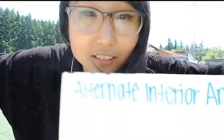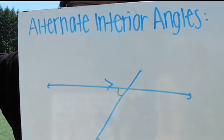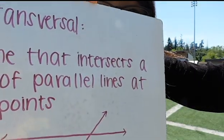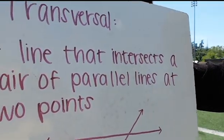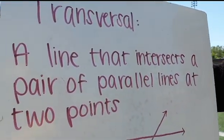Let's be alternate interior angles. Alternate interior angles are congruent and be on opposite sides of the transversal. A transversal is a line that intersects a pair of parallel lines at two points.